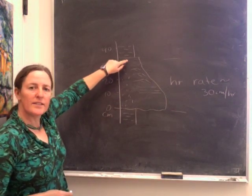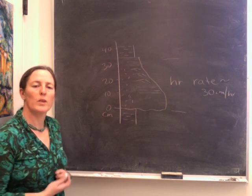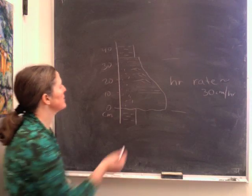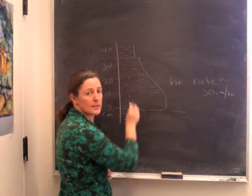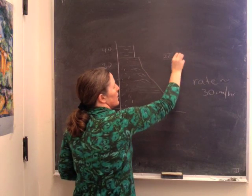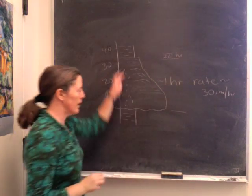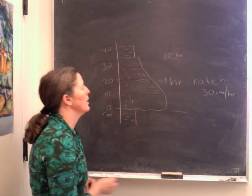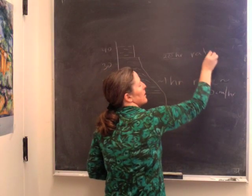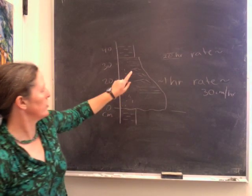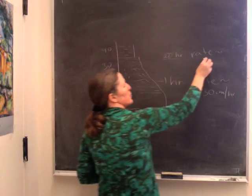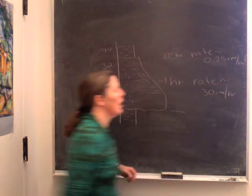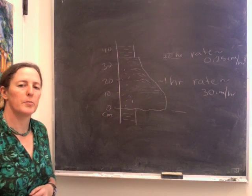When you get to the silt that's settling out from what's left over from the turbidite, that might be hours or even a day. Let's say in this case that this is 20 hours for 5 centimeters of sediment. So that would be a rate of about 5 centimeters in 20 hours, which is about 0.25 centimeters per hour. So it's a couple orders of magnitude slower deposition rate.